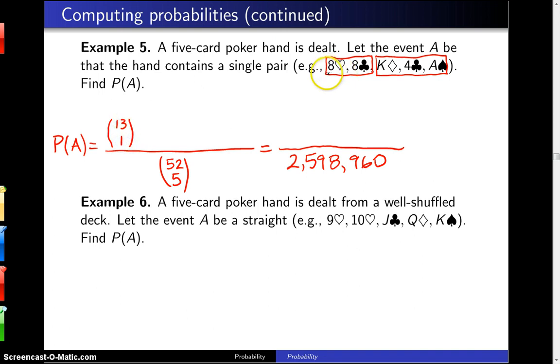And 13 choose 1 is saying of the 13 ranks that are out there, namely ace, 2, 3, 4, 5, 6, 7, 8, 9, 10, jack, queen, king. We have 13 different choices, and we're choosing one of those ranks. In this particular case, we chose 8, and that is the first part of the numerator.